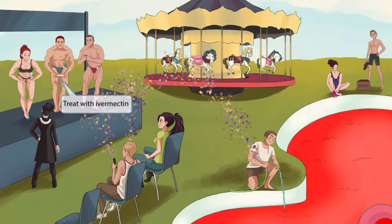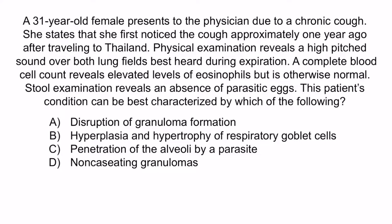Now that we've covered the image, let's review with a question. A 31-year-old female presents to the physician due to a chronic cough. She states that she first noticed the cough approximately one year ago after traveling to Thailand. Physical examination reveals a high-pitched sound over both lung fields best heard during expiration. A complete blood cell count reveals elevated levels of eosinophils but is otherwise normal. Stool examination reveals an absence of parasitic eggs. This patient's condition can be best characterized by which of the following? A. Disruption of granuloma formation. B. Hyperplasia and hypertrophy of respiratory goblet cells. C. Penetration of the alveoli by a parasite. Or D. Non-caseating granulomas.